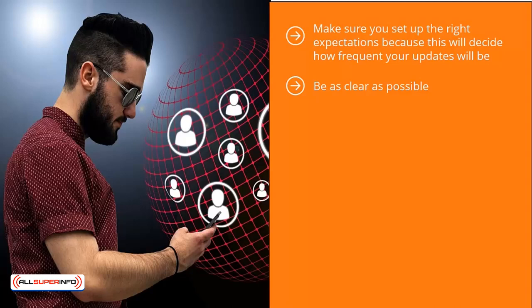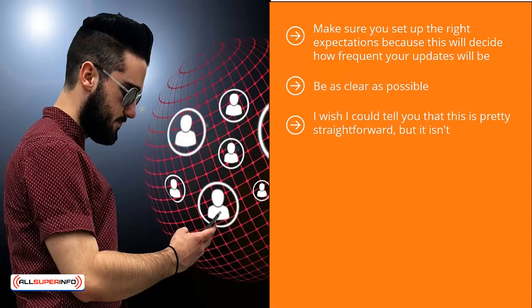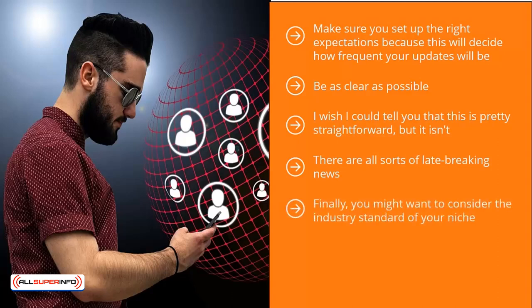I wish I could tell you that this is straightforward, but it isn't. It really depends on the incentive you're using, and it is also influenced by your target niche. Maybe you're in a niche where people expect rapid updates. For example, the cryptocurrency world changes rapidly — there are all sorts of late-breaking news. If you signed up for a mailing list specializing in cryptocurrency, you'd probably want to be notified about the latest moves by global regulators or authorities involving Bitcoin and other cryptocurrencies.